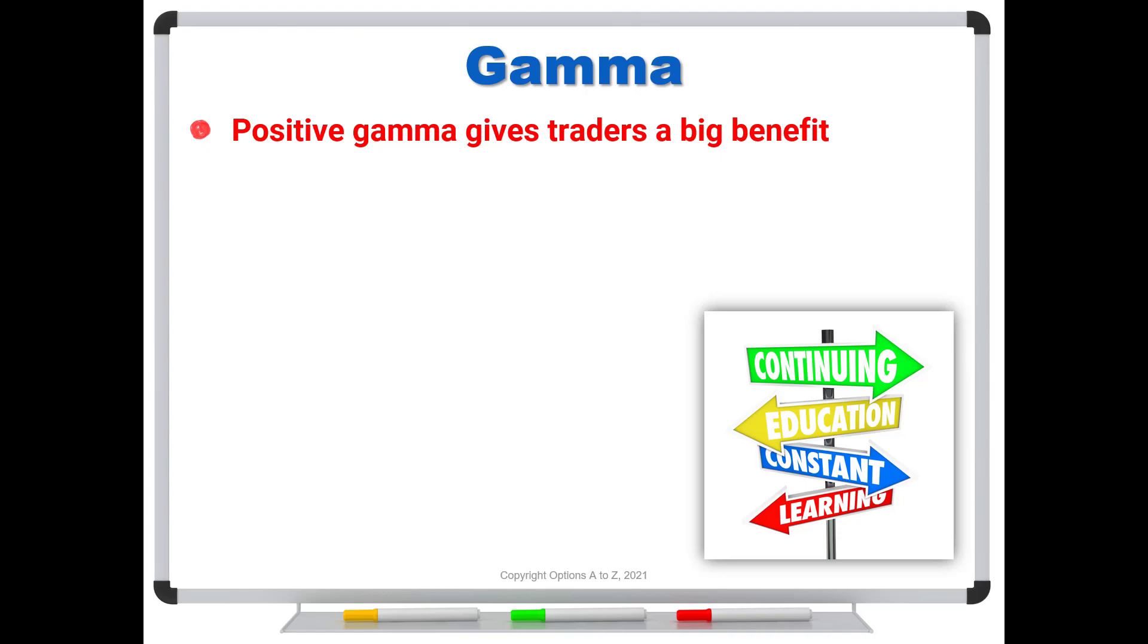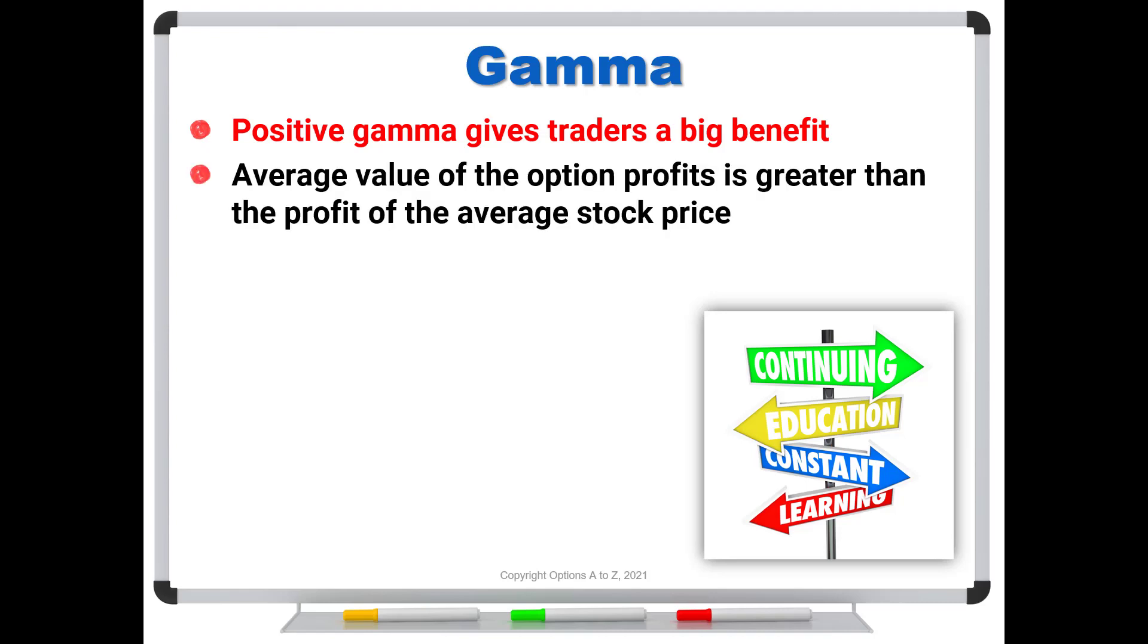What's important is that you recognize that your risk graph curves upward, and that's giving you a big benefit as an options buyer. So the first big point of this video is to recognize that positive gamma gives traders a big benefit. And what it is in words is that it's saying that the average value of the option profits, that's what we saw in that vertical axis, is greater than the profit you would realize evaluated at the average stock price.